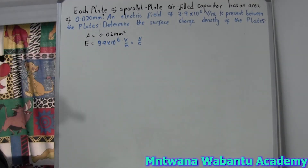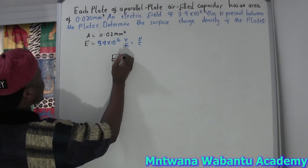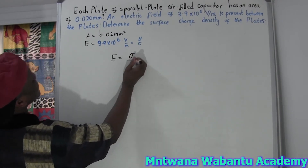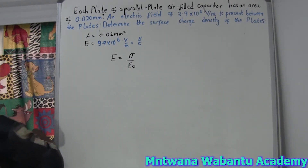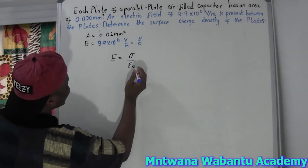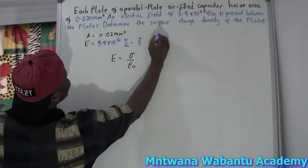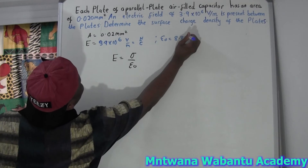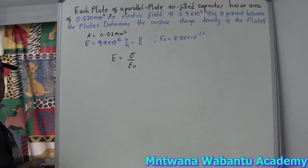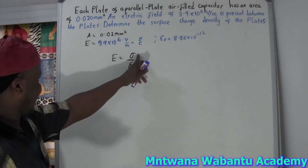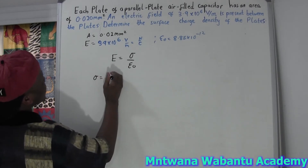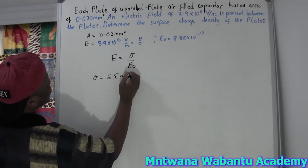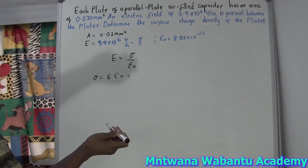Now let's get to the business. They ask for the surface charge density. We have a very interesting formula: electric field equals surface charge density divided by permittivity. Permittivity is always constant — 8.85 times 10 to the power of negative 12. So we rearrange: surface charge density equals electric field times permittivity.